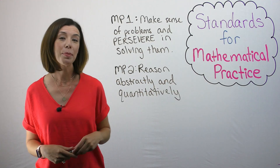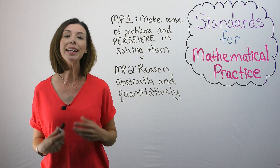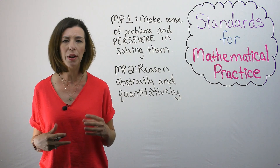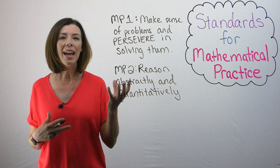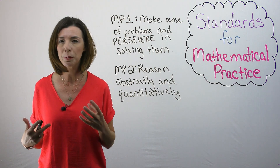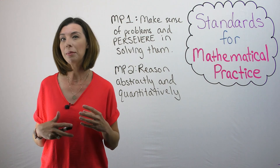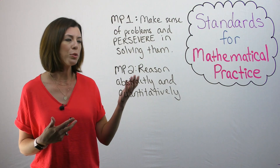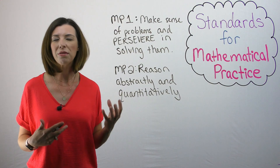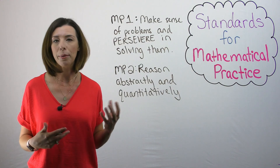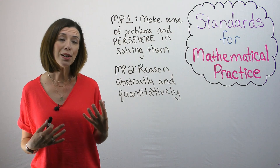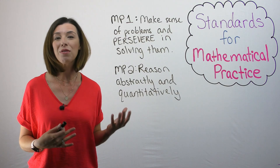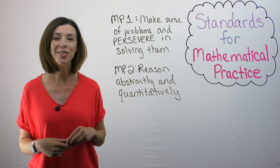Mathematical practice number two is to reason abstractly and quantitatively. Basically, we want students to be really flexible with their use of numbers. We want them to be able to take a problem and turn it into a numerical expression, and likewise, take an expression and turn it into a story problem or word problem. We really want them to reason with those numbers and be flexible — this is where our number operation strategies come into play. As a teacher, we want to accept multiple answers and have students defend their answers so we can understand their thinking.